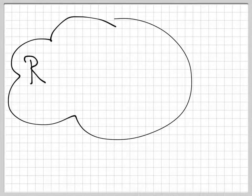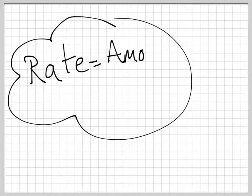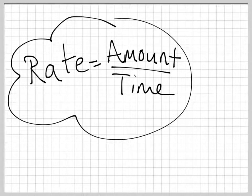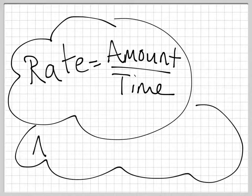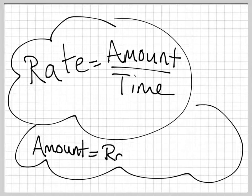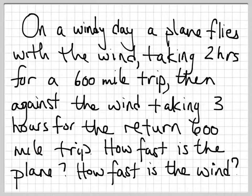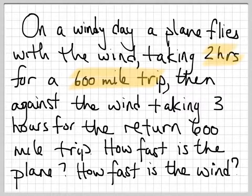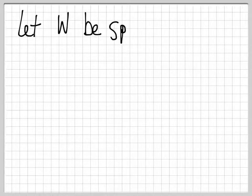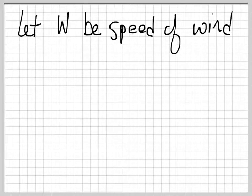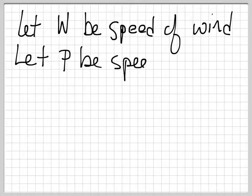Now, we're asking how fast. And you should be thinking in your head that this is a rate question. Rate is amount over time, or another way of thinking about this is amount equals rate times time. So we're going to use this to help us. Looking back at the question, I see an amount and I also see a time. And what we need are some variables to help us figure out what the rate is. So we're going to let w be the speed of the wind and let p be the speed of the plane.